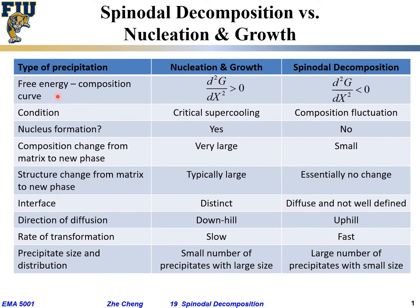The second row lists the free energy versus composition curve. For spinodal decomposition to happen, the second order derivative of Gibbs free energy versus composition has to be negative, which means the curve has to be in the concave down portion. Only within the inflection point where the curve is concave down will spinodal decomposition occur naturally.